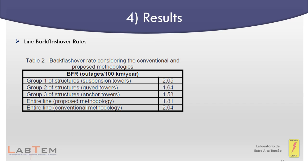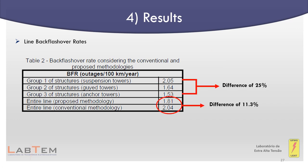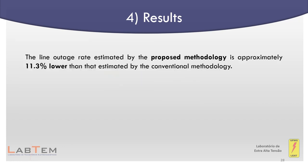The line backflash-over rates were calculated using the conventional and proposed methodologies. Table 2 summarizes the obtained results assuming NG equals 5 flashes per square kilometer per year. The group of anchor towers has the lowest backflash-over rate, followed by the group of Gaia towers, and finally the group of suspension towers presents the highest rate. The line outage rate estimated by the proposed methodology is approximately 11.3% lower than that estimated by the conventional methodology, stemming from the better performance of the guyed and anchor tower groups compared to the dominant suspension tower group assumed in the conventional approach.